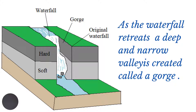As we can see in this diagram, as the waterfall continues to retreat over time, a steep and narrow valley will be created called a gorge. The gorge usually extends from the point where the original waterfall was located to the current location of the waterfall.